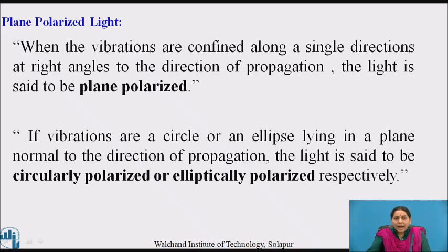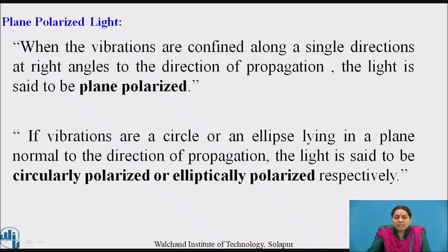An unaided human eye cannot identify the state of polarization of light. However, some insects and animals possess polarization-sensitive vision. In plane polarized waves, oscillations are strictly confined to a single plane perpendicular to the direction of wave propagation. The plane polarized wave is also called a linearly polarized wave.